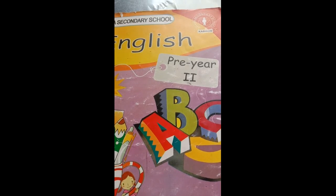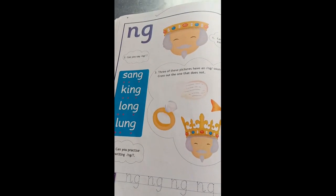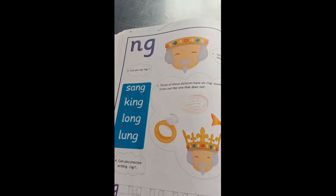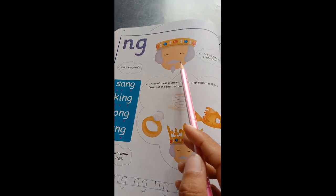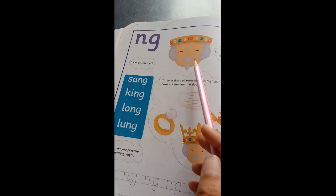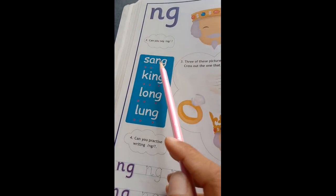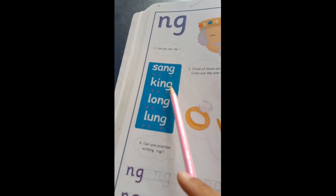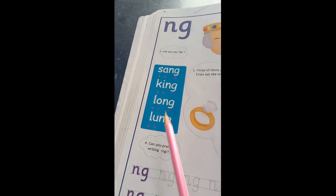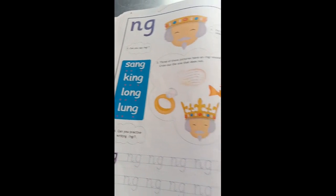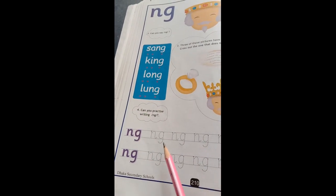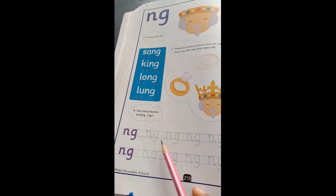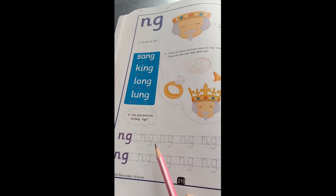So please take out page number 210. And today's topic is, Digraph ING. Which Digraph is? ING. He is a king. King. Sang. King. Long. Long. ING. Which Digraph is? ING. You will complete and trace, Digraph of ING.